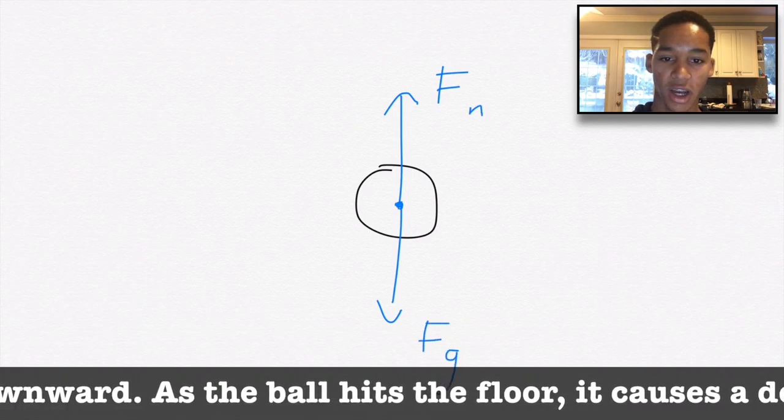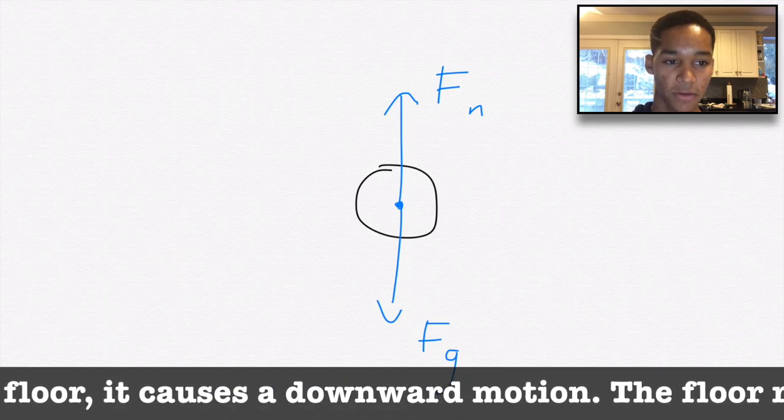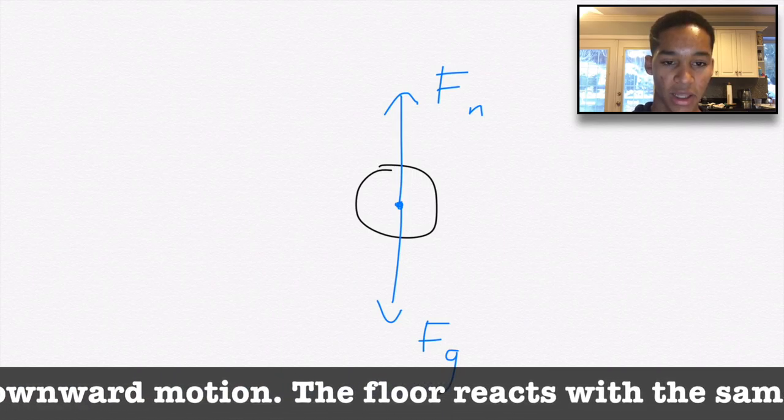As the ball hits the floor, it causes a downward motion. The floor reacts with the same amount of force in the opposite direction, propelling the ball upward.